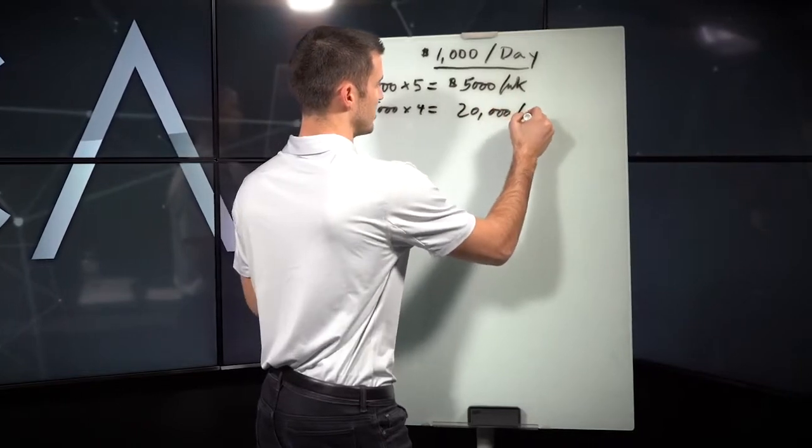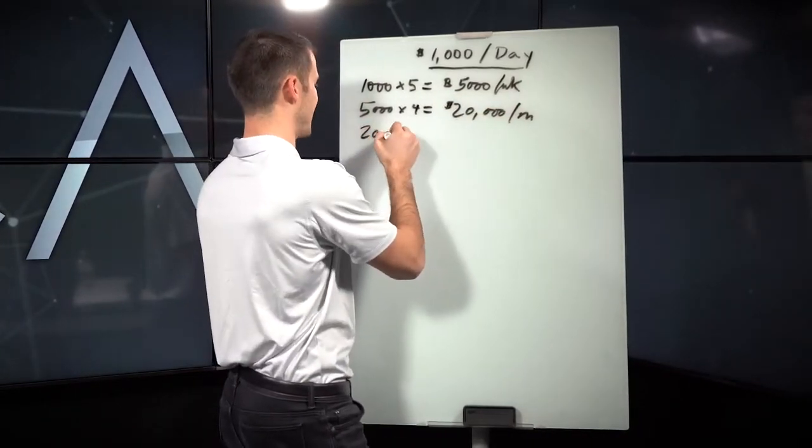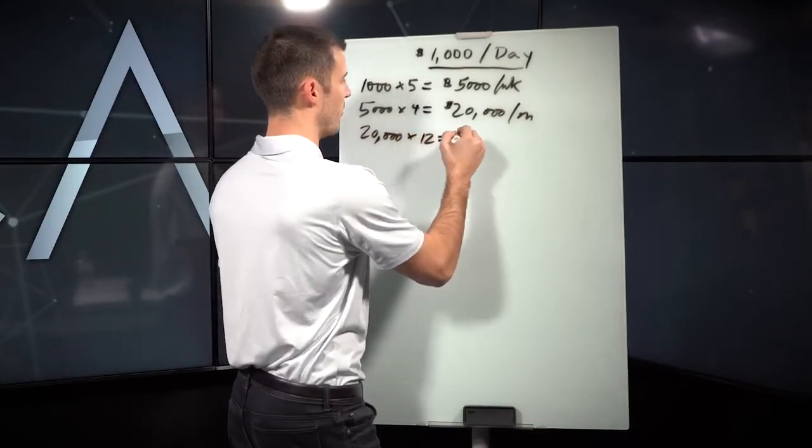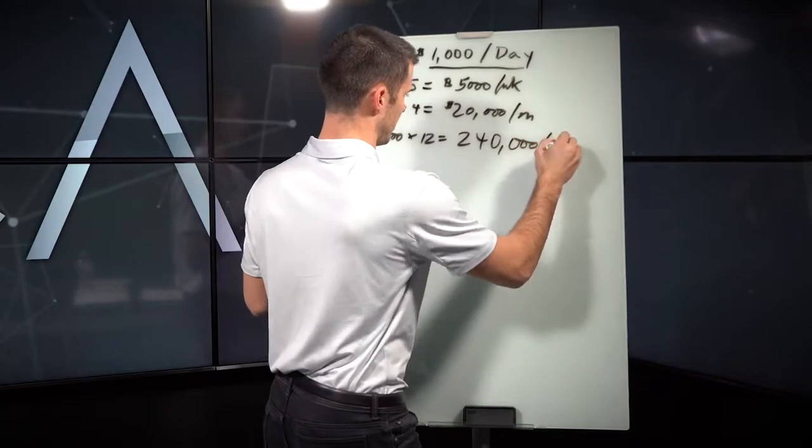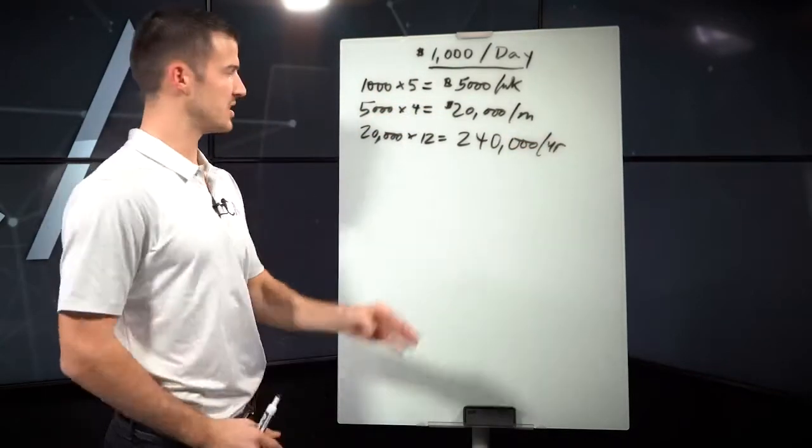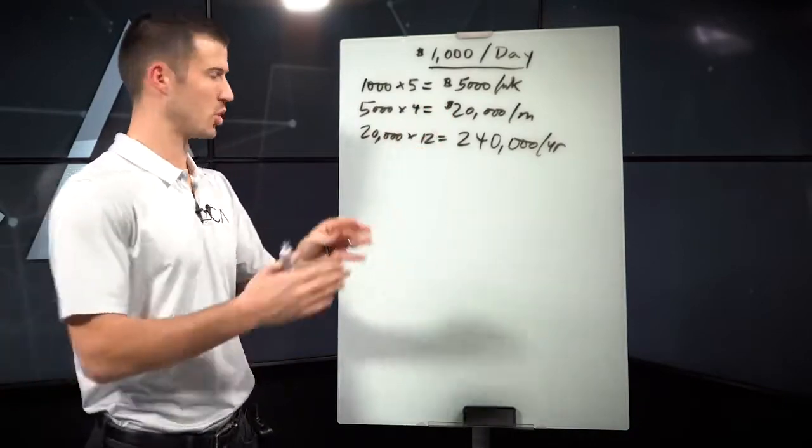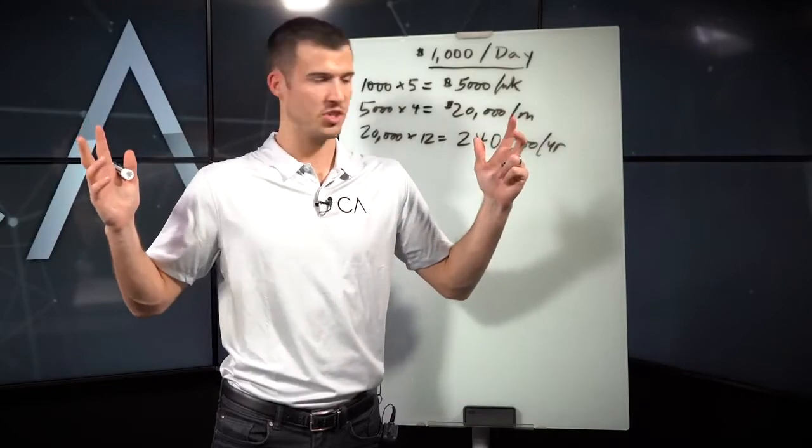Let's take $1,000 per day times five days per week. That's $5,000 per week. Now let's take $5,000 per week times four weeks. That's about $20,000 per month. Now let's take $20,000 per month times 12 months. You have $240,000 per year.